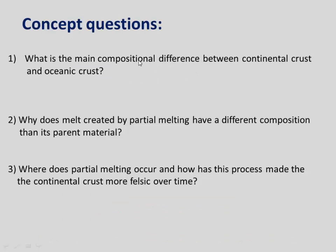In review, this video had three parts with three corresponding concept questions. The first was about the difference between continental and oceanic crust. The second was how partial melting works — why does melt created by partial melting have a different composition than its parent material? And the third part talked about where partial melting occurs and how this process has made the continental crust more felsic over time. I'd like for you to be able to explain how that process works and how it made the crust more felsic. Thanks everybody, see you in class.